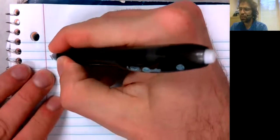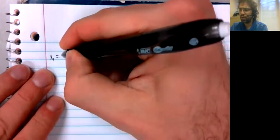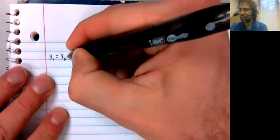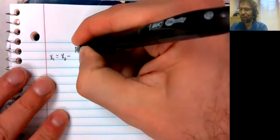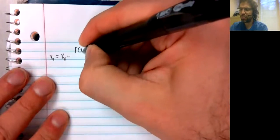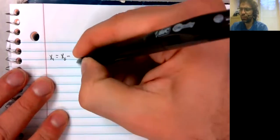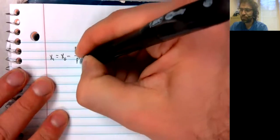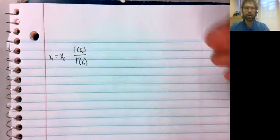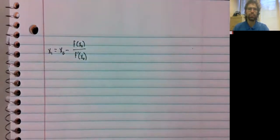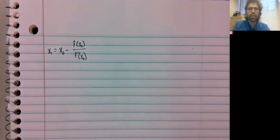Newton's method. X sub one equals X sub zero minus F of X sub zero over F prime of X sub zero.